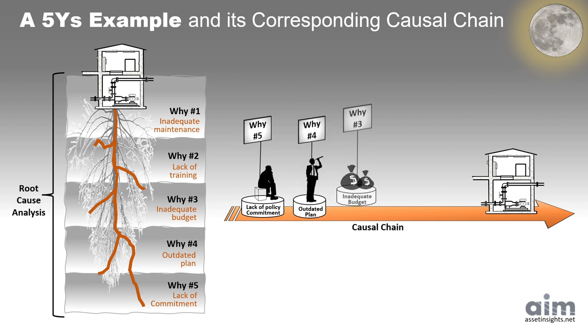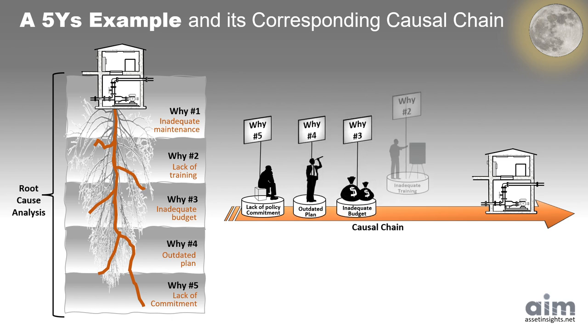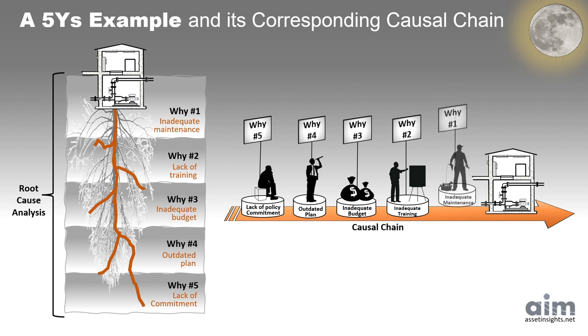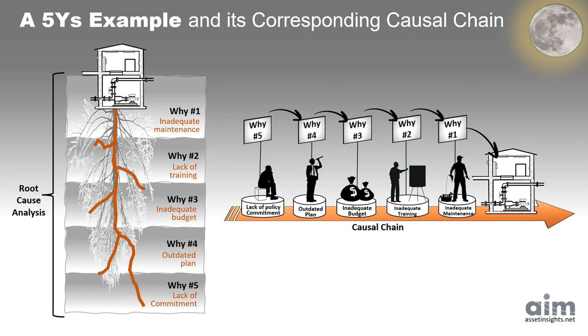But look closer and you'll see a causal chain woven from missed opportunities, blind spots, and deeper system flaws. Root causes aren't buried — they're built. One decision, one omission, one why at a time. And if we want to solve the real problem, we must learn to read the chain.